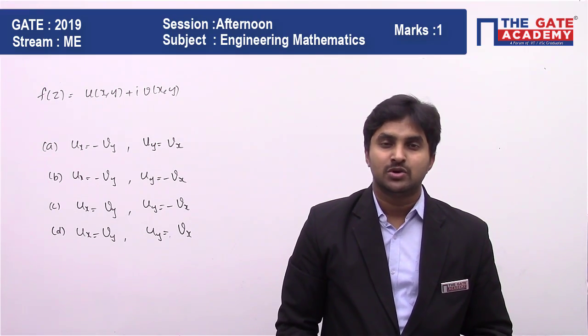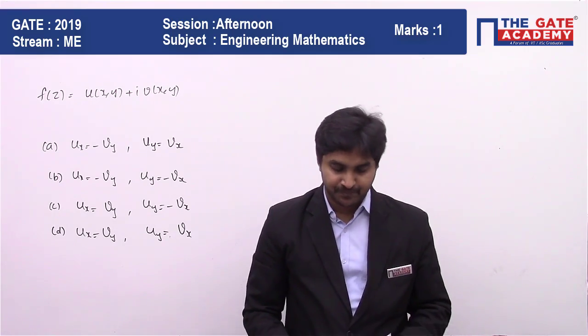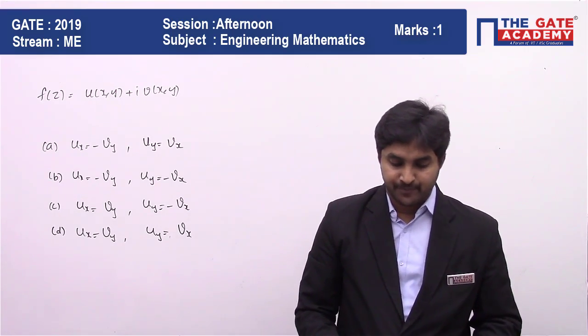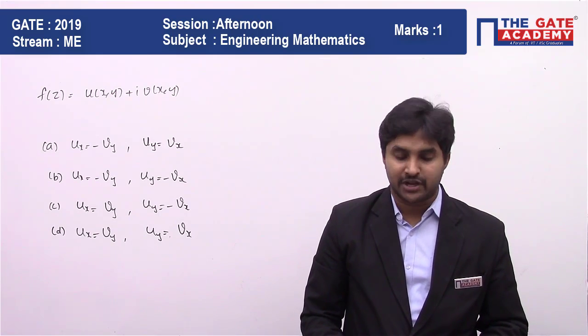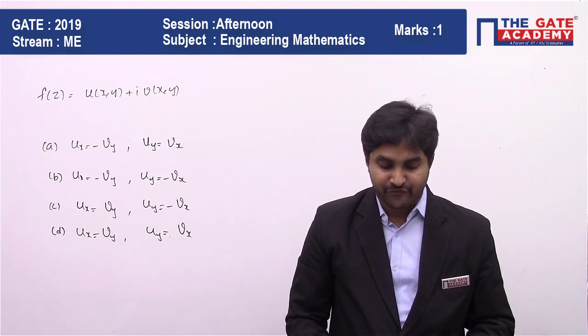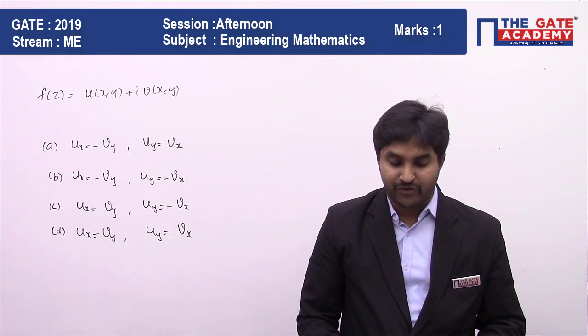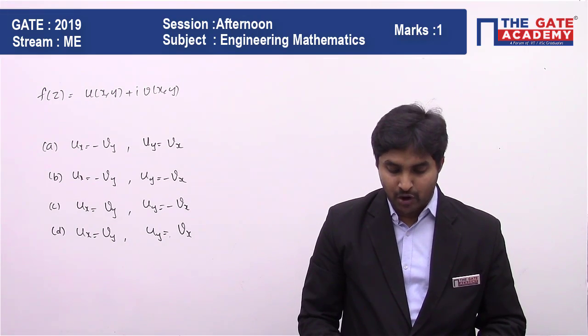First of all, let me read the question. An analytic function f(z) of the complex variable z = x + iy may be written as f(z) = u(x,y) + iv(x,y). Then u(x,y) and v(x,y) must satisfy: